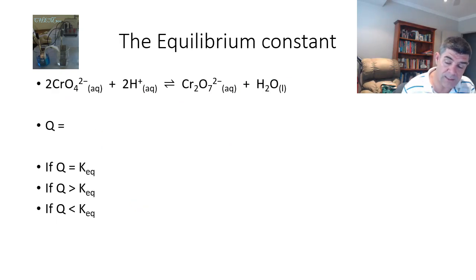So here's an example we have here dichromate ions and chromate ions and they are in equilibrium with hydrogen ions and water. We can find the equilibrium quotient by the product's concentrations divided by the reactant concentrations.